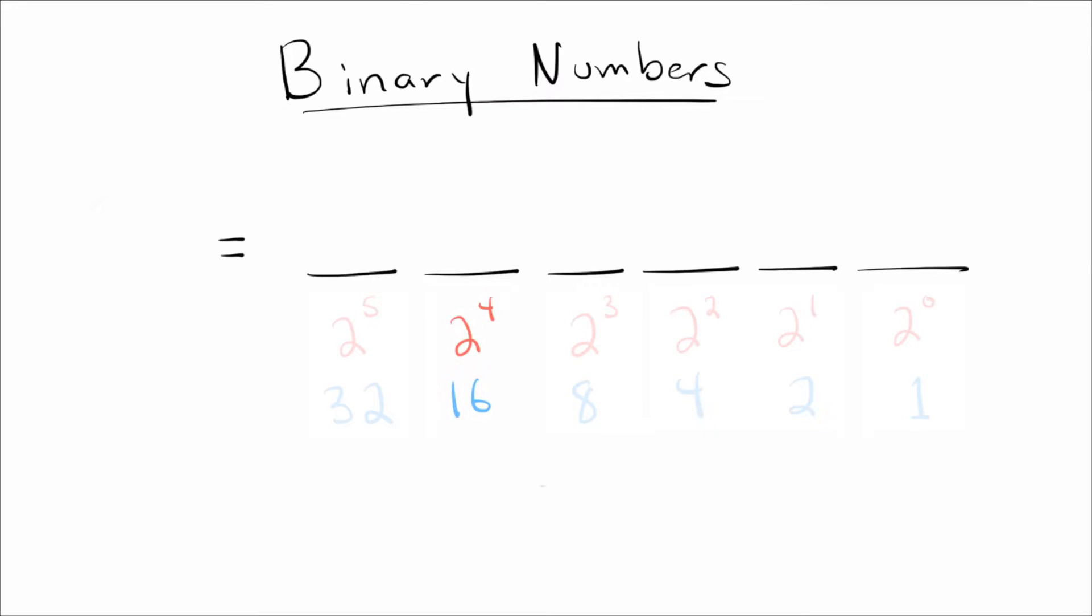Okay, so let's go ahead and just try an example. Let's say I have the number 30, and I want to write that in binary. How do I do that? Well, I'm going to work from left to right. All I do is I see, okay, how many 32s are there in 30? Well, none, right? Because 30 is smaller than 32.